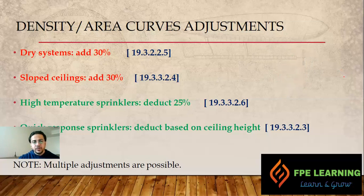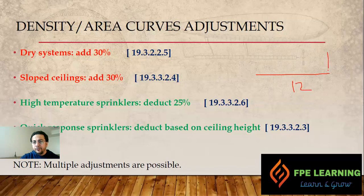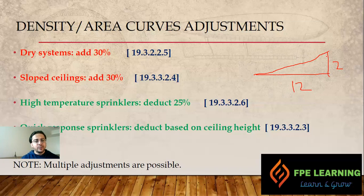For reference, the definition of a sloped ceiling is based on FM Global research: if the slope is more than 16.7 percent — that is, a rise of more than 2 units for every 12 units of horizontal run — it is considered a sloped ceiling and the 30 percent addition applies.